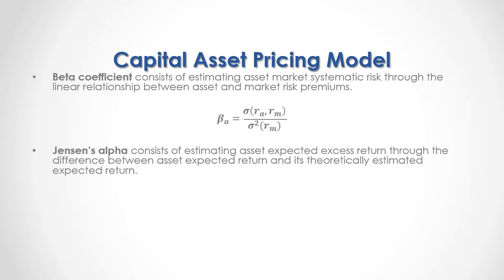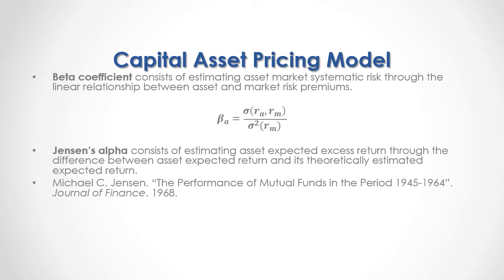Jensen's alpha consists of estimating asset expected excess return through the difference between asset expected return and its theoretically estimated expected return. For full reference, I recommend that you read Michael Jensen, "The Performance of Mutual Funds in the Period from 1945 to 1964," published in the Journal of Finance in 1968. As a formula, Jensen's alpha for the asset is equal to the expected asset return minus the theoretically estimated expected return through the Capital Asset Pricing Model.